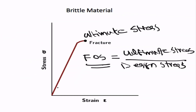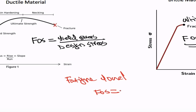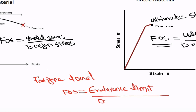To summarize: for ductile materials it is yield stress divided by design stress; for brittle materials it is ultimate stress divided by design stress. One more case to note is fatigue or dynamic stress conditions. In the case of fatigue loading, the factor of safety equals the fatigue capacity of the material — which is the endurance limit stress — divided by the design stress.